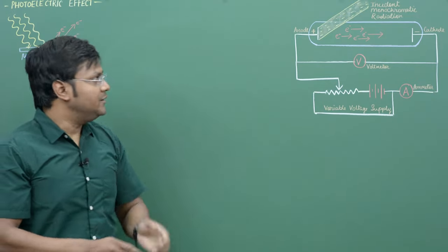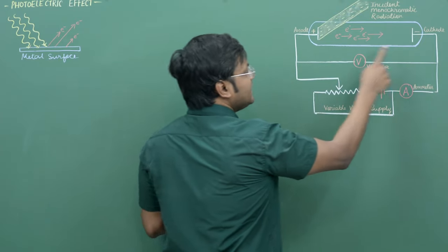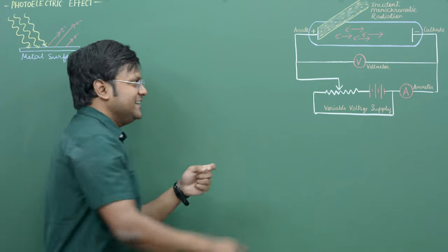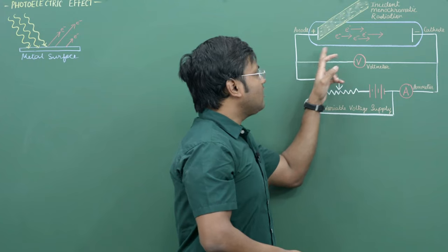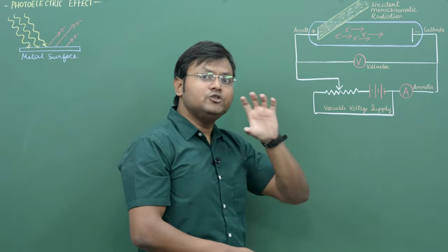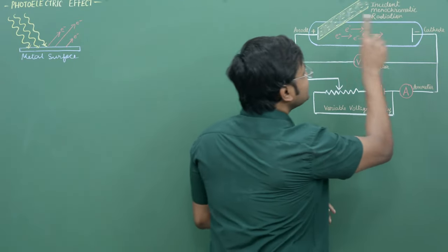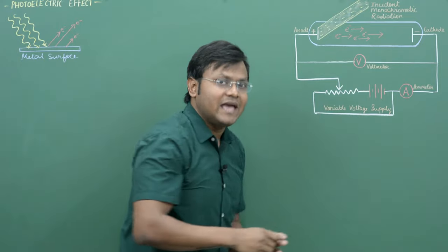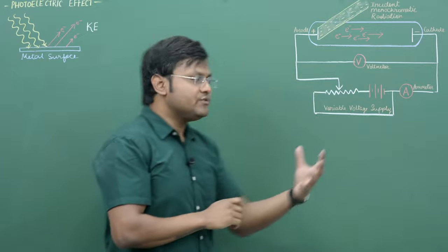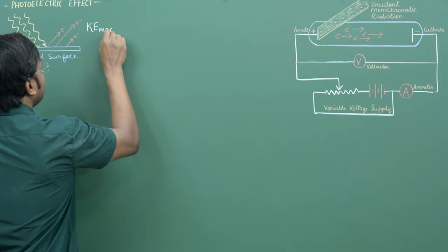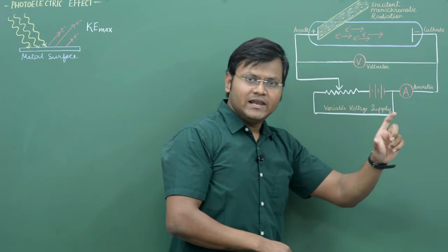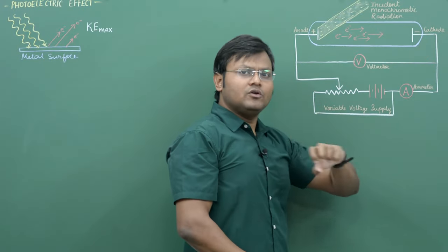Since electrons are negatively charged particles and the electric field here points from left to right, negatively charged particles travel in the opposite direction — they experience retardation traveling from left to right. Only those electrons with sufficient kinetic energy to overcome the negative potential difference will reach the cathode. Not all electrons have the same kinetic energy, so we are interested in the maximum kinetic energy possible for these photoelectrons.